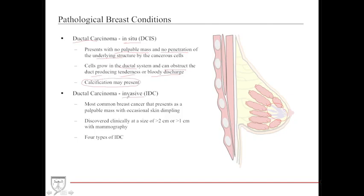When ductal carcinoma becomes invasive, the cancer breaks through the basement membrane and invades other breast tissues and even the lymphatics. This often presents with a palpable mass and skin dimpling. In situ usually has no palpable mass, while invasive usually does. Lesions two centimeters or larger can be palpated, but anything smaller usually needs to be picked up on mammography.